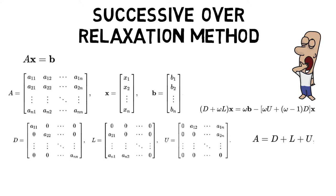The method of successive over-relaxation is an iterative technique that solves the left-hand side of this expression for x using previous value of x on the right-hand side. Analytically, this may be written as x^(k+1) = L_ω x^k + c. Here x^k denotes the kth approximation or iteration of x.